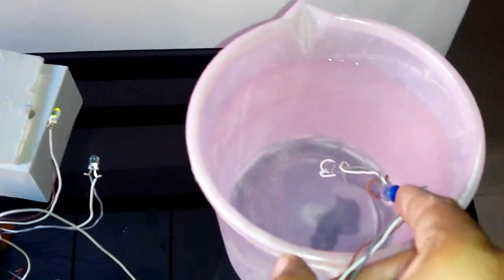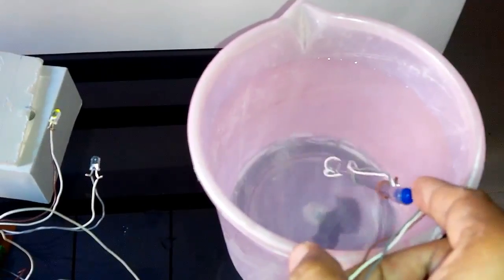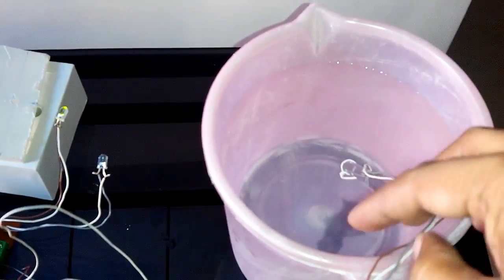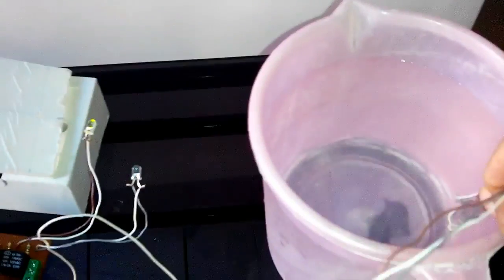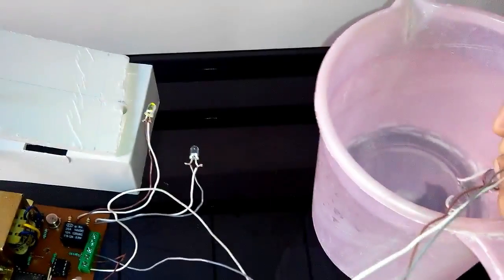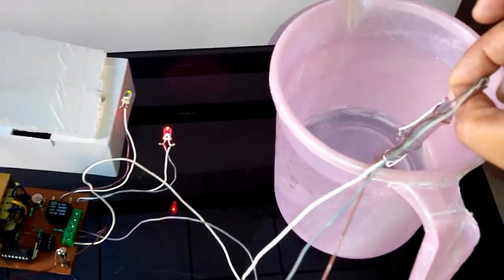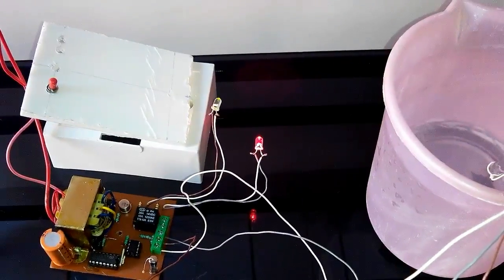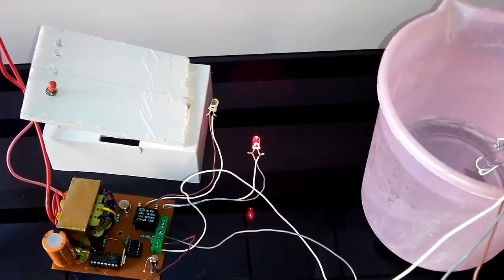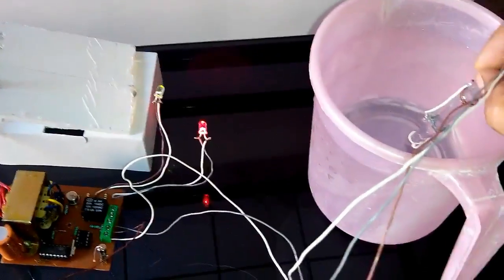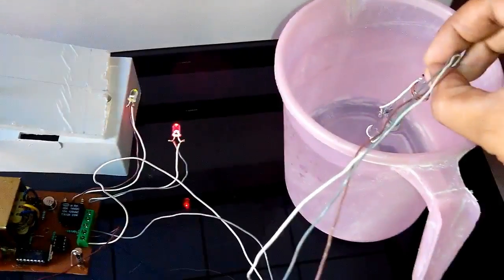When the water goes down in the tank and these two sensors come out of the water, the pump will start. Let's see - if we pull this out, we can see the red LED glowing, showing that the pump will start. When the pump starts, it fills the tank, and these two upper sensors will go down in water and the pump will again stop.